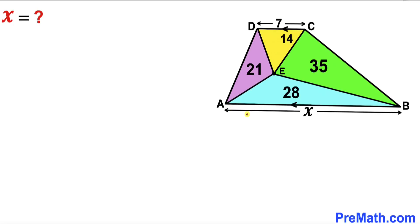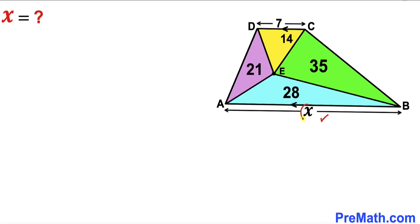Welcome to pre-math. In this video we have got trapezoid A, B, C, D as you can see in this diagram, such that the area of the purple triangle is 21, the area of the blue triangle is 28, the area of the green triangle is 35, and the area of the yellow triangle is 14. The base CD is 7 units and the other base AB is represented by X units. Our task is to find the value of this base X.